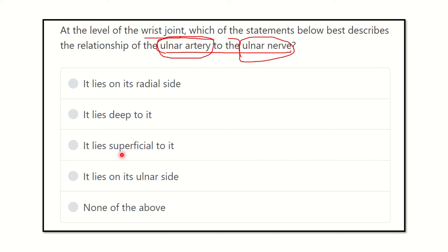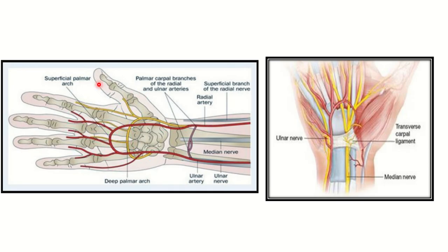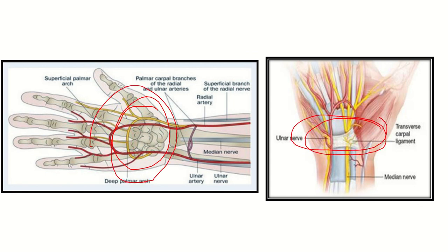We have to find out how the ulnar artery and ulnar nerve pass at the wrist joint, and determine the relationship of the ulnar artery compared to the ulnar nerve. Here we can see the hand including the forearm, and here is the wrist joint in this picture — so we have to focus here.